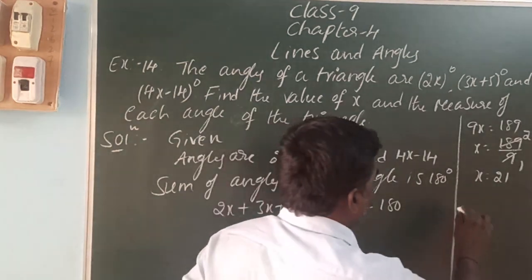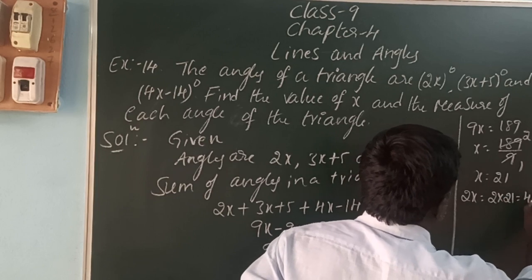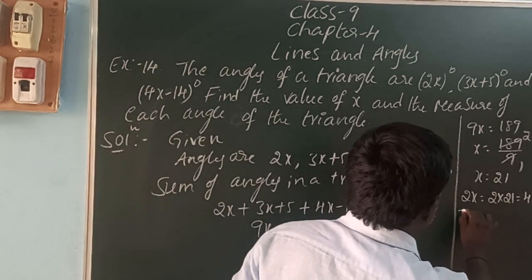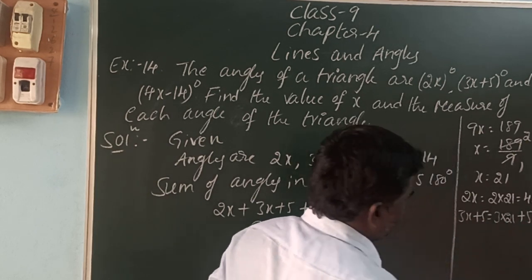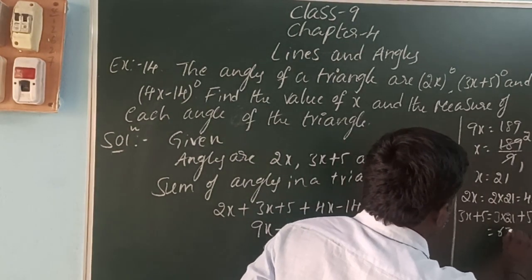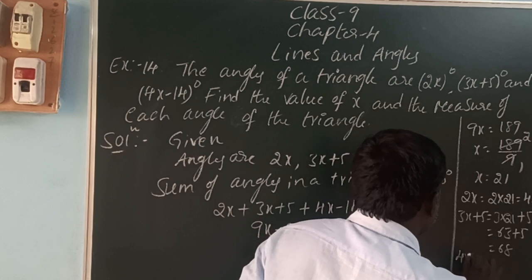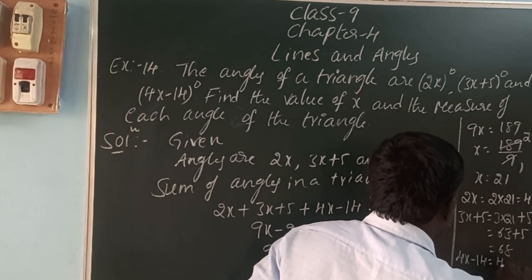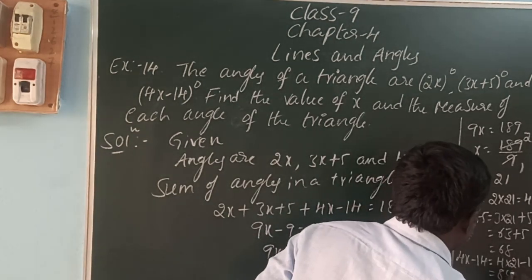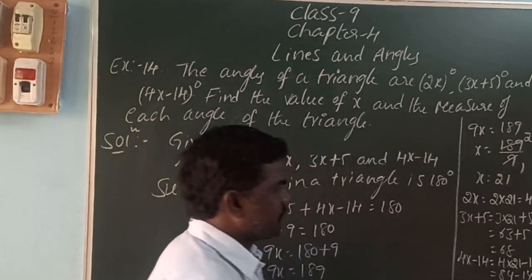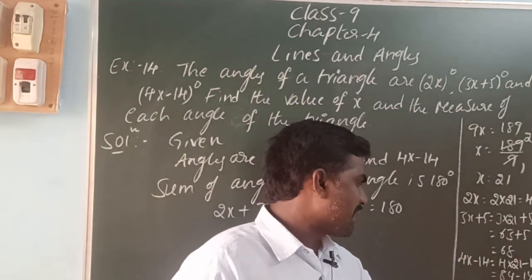The first angle is 2x, that is 2 into 21, equal to 42 degrees. The second angle is 3x plus 5, that is 3 into 21 plus 5, which is 63 plus 5, equal to 68 degrees. The third angle is 4x minus 14, that is 4 into 21 minus 14, which is 84 minus 14, equal to 70 degrees. So the first angle is 42, second angle is 68, third angle is 72 degrees.